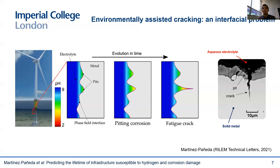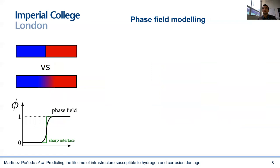Tracking evolving interfaces is a well-known mathematical and computational challenge. The good news is that a paradigm has been proposed that makes this tracking an easy task: the so-called phase field method, which goes back to van der Waals but has only recently taken off with the help of computers. Mathematically, we can treat the interface as an object with a finite thickness by using an auxiliary phase field variable that tells us where the interface lies. The phase field variable takes two distinct values in each of the phases — 0 or 1 — and varies smoothly in between at the interface.